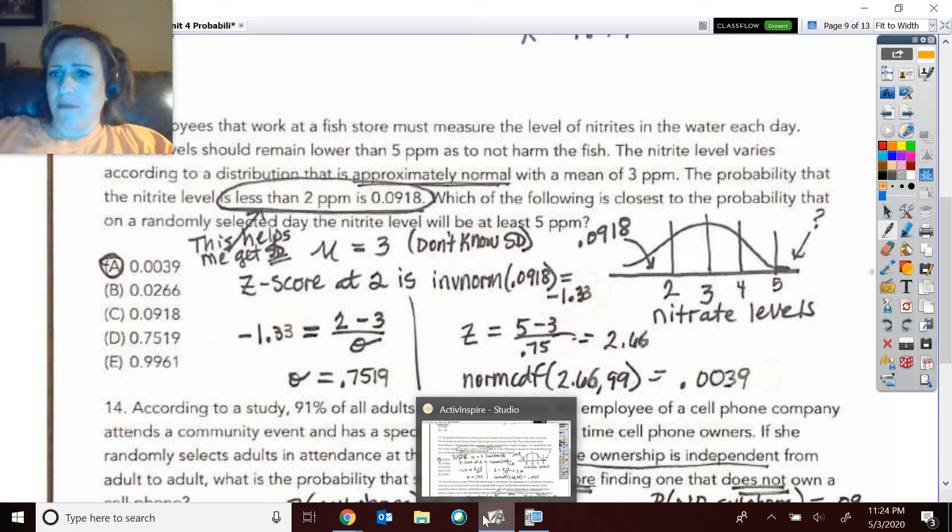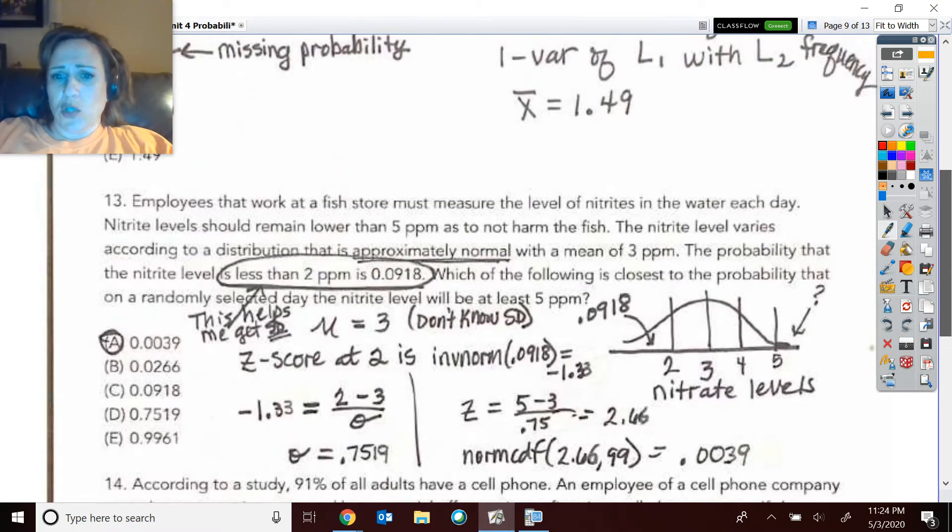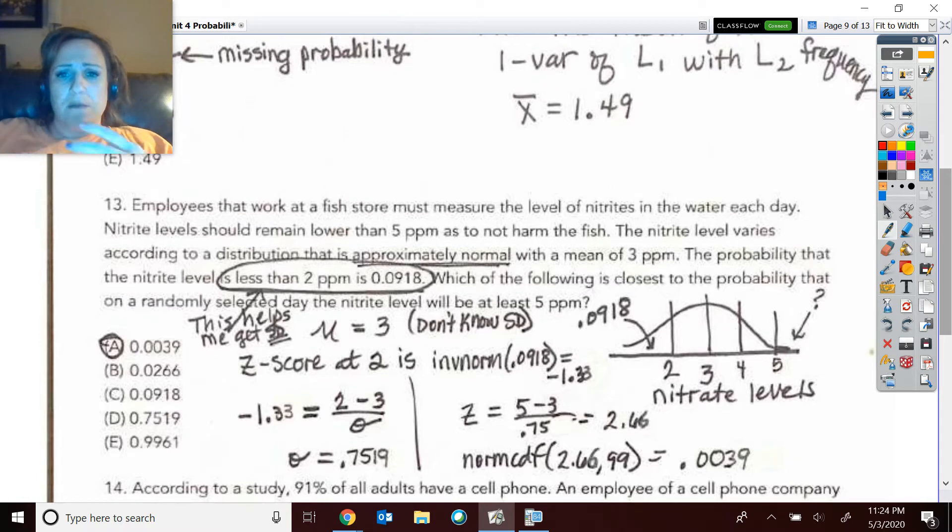All right, let's take a look at number 13. It's a doozy. It had multiple steps to be able to come up with that answer, the answer of A.